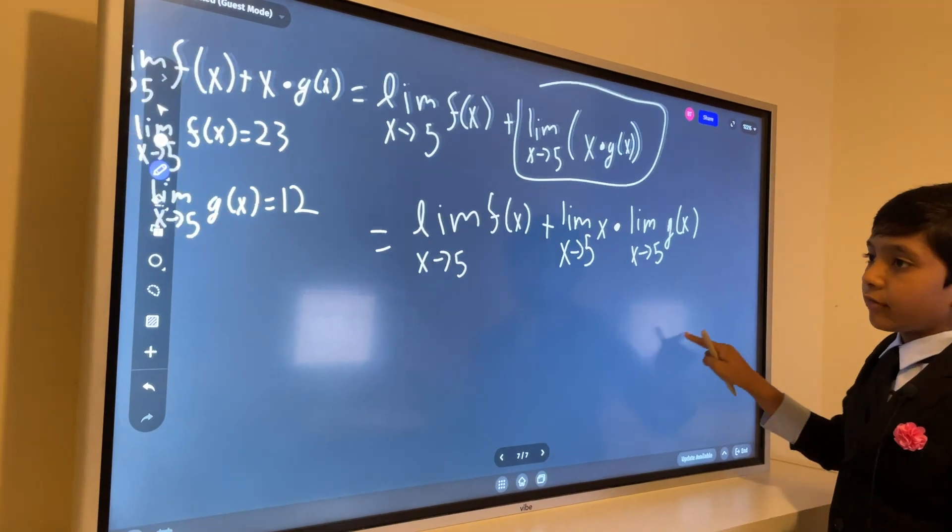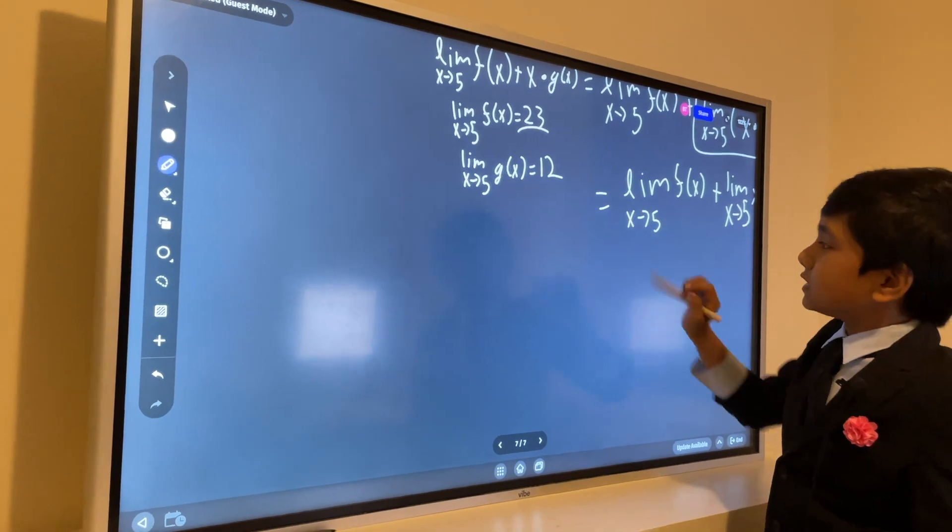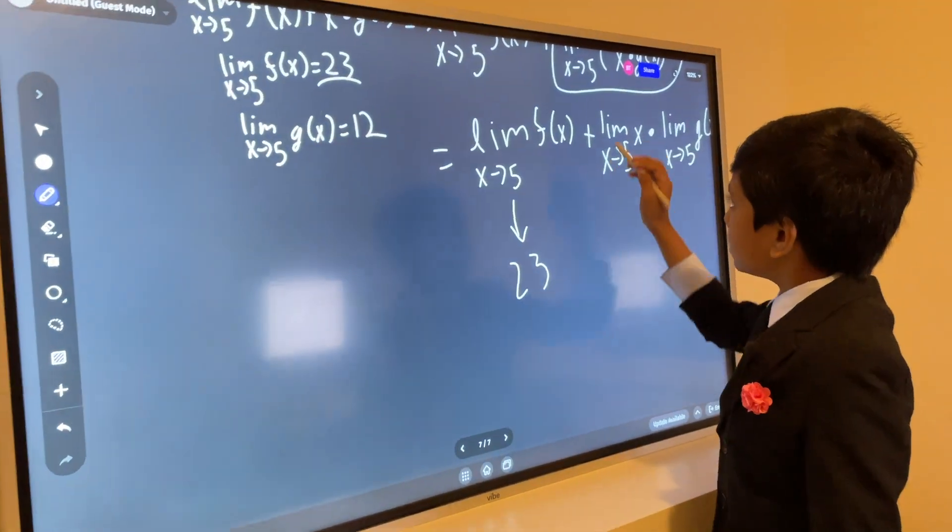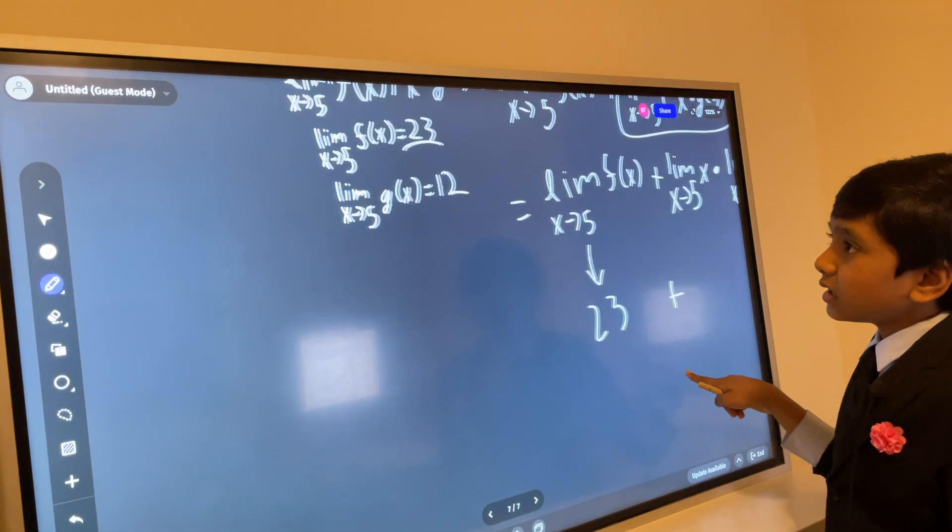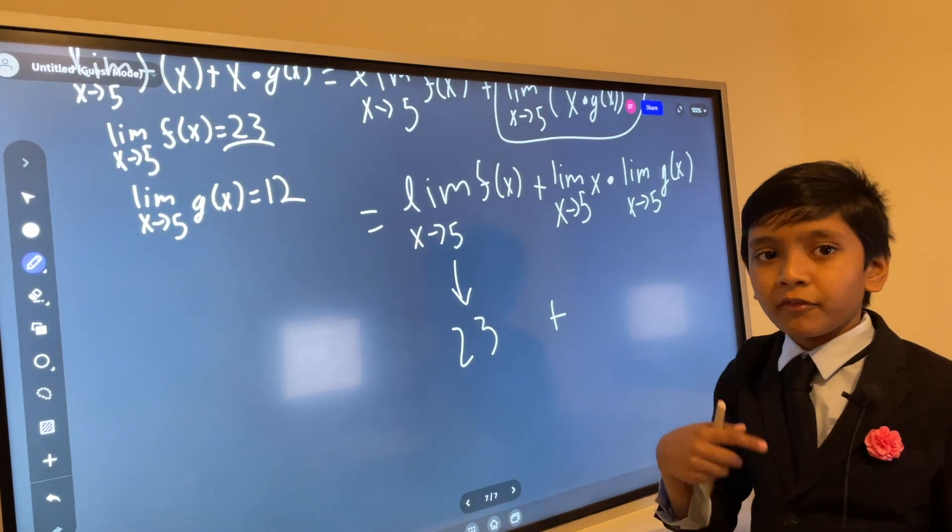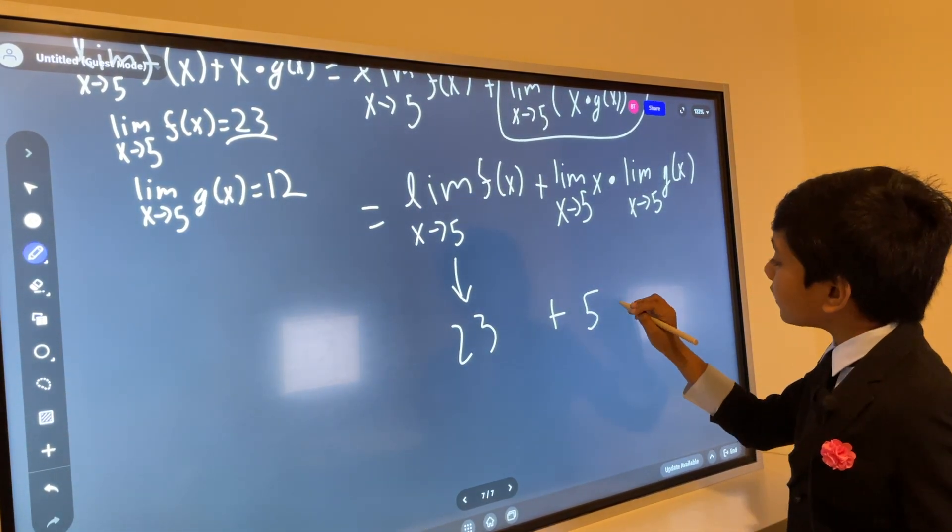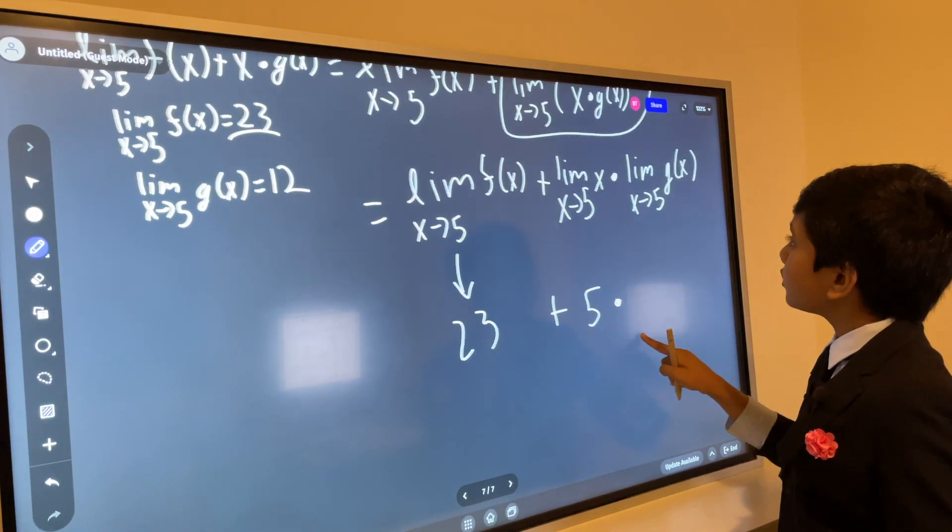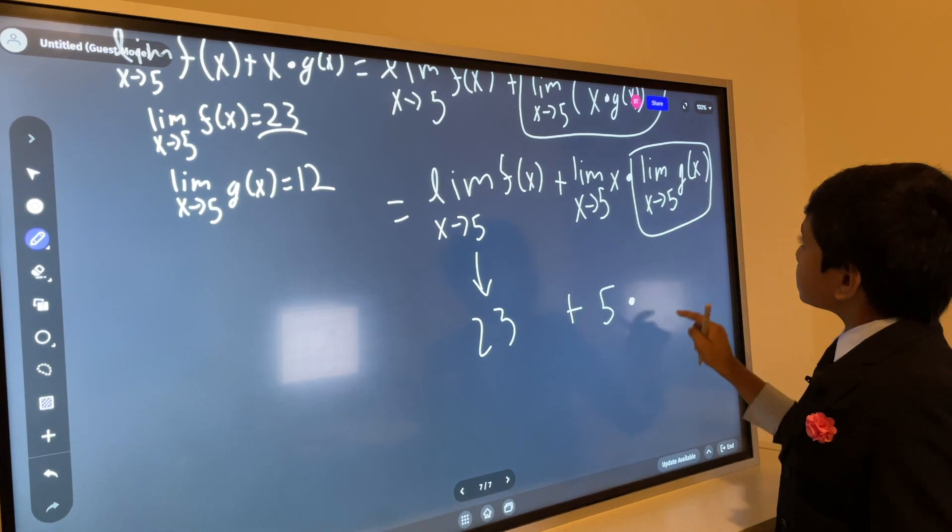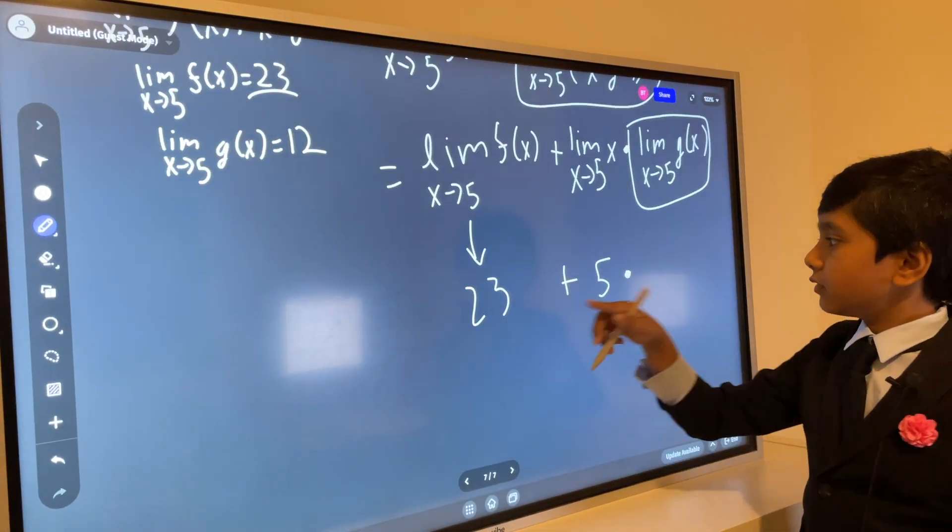Now, let's plug in our values. We know the limit as x approaches 5 of f(x) is 23, so let's plug in 23 there. Then we have a plus, and then we have the limit as x approaches 5 of x, well, x is approaching 5, so wouldn't it just be 5? And then you multiply that by this. Limit as x approaches 5 of g(x), so that would be 12 as given.